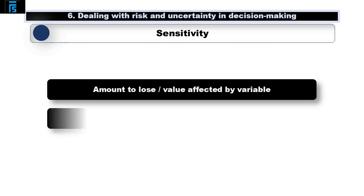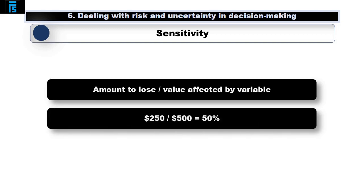The value affected by the variable we're looking at is $500, the fixed costs themselves. $250 divided by $500 is 50%.